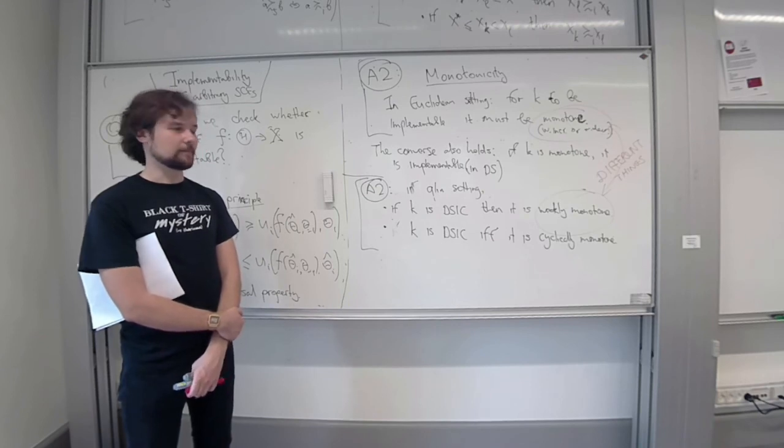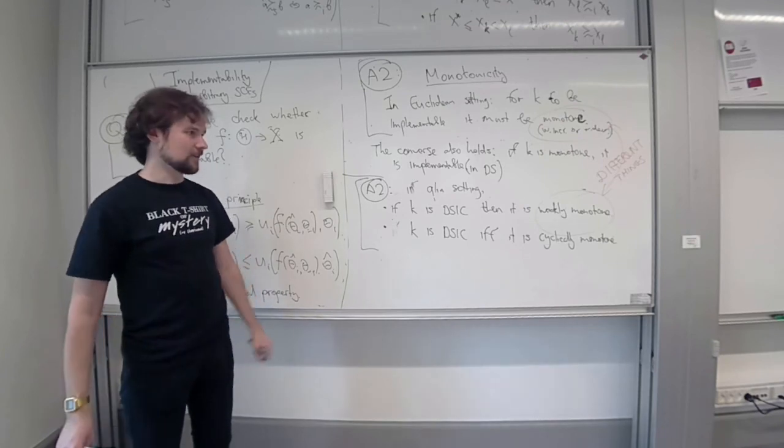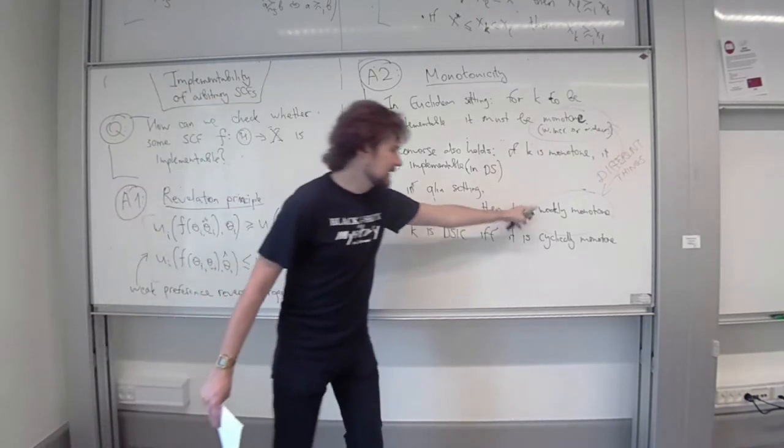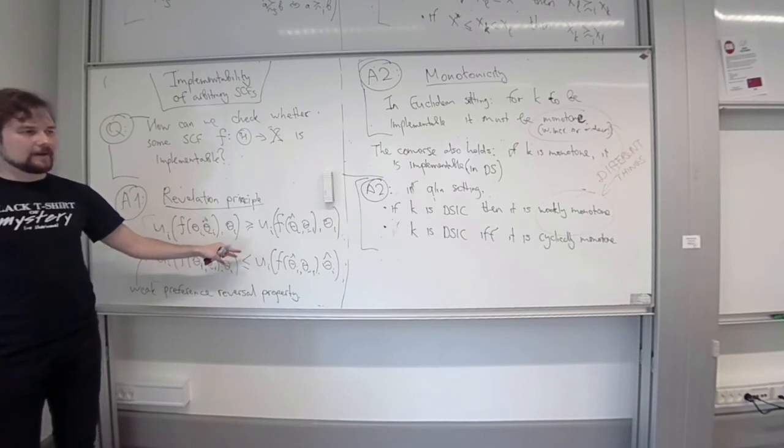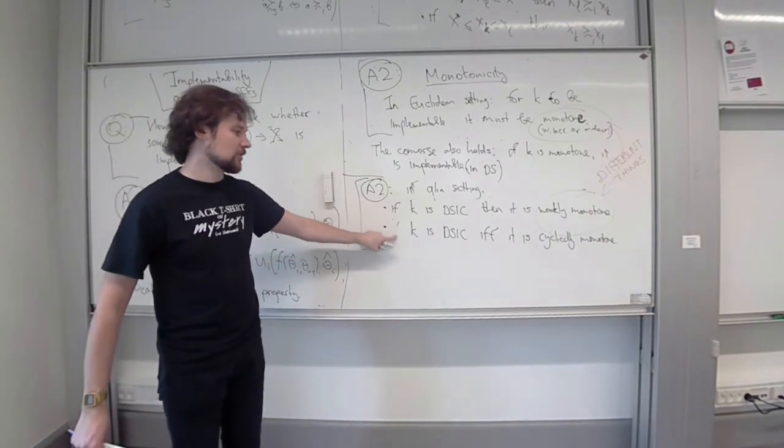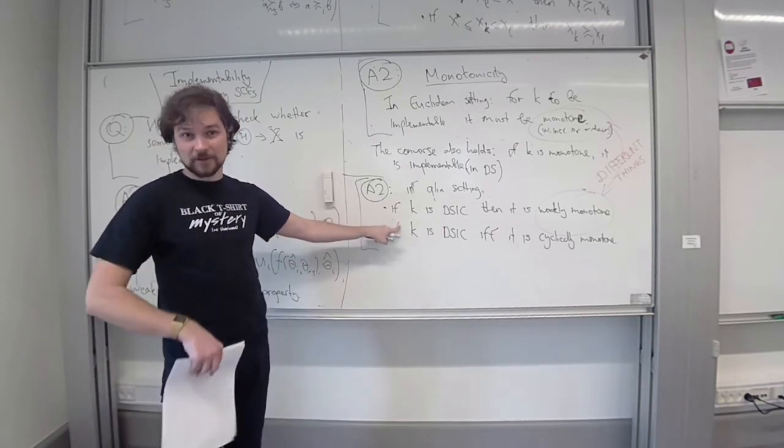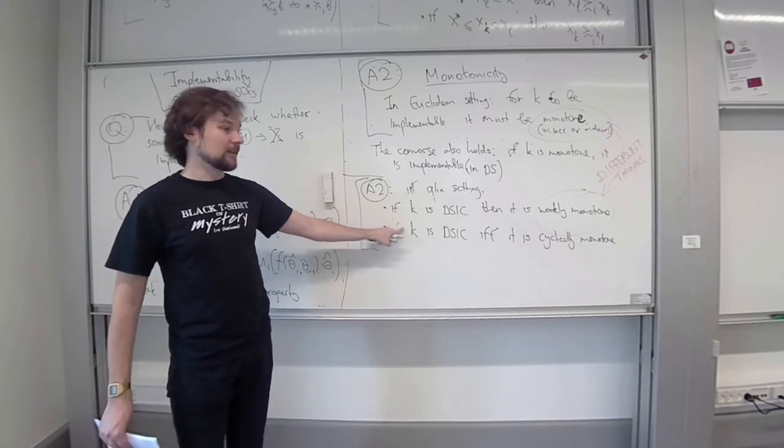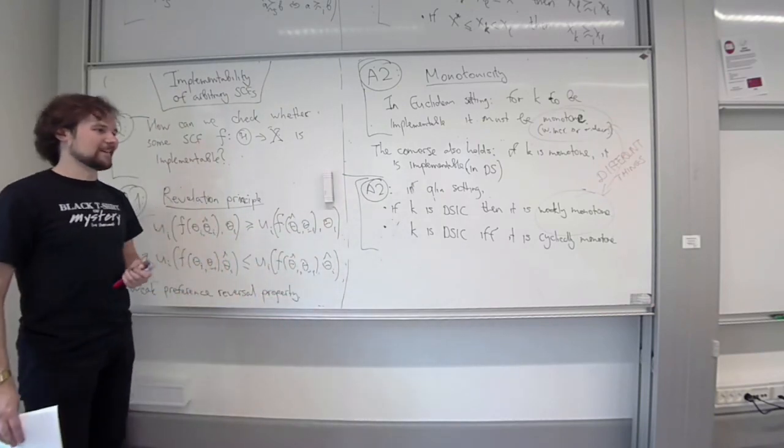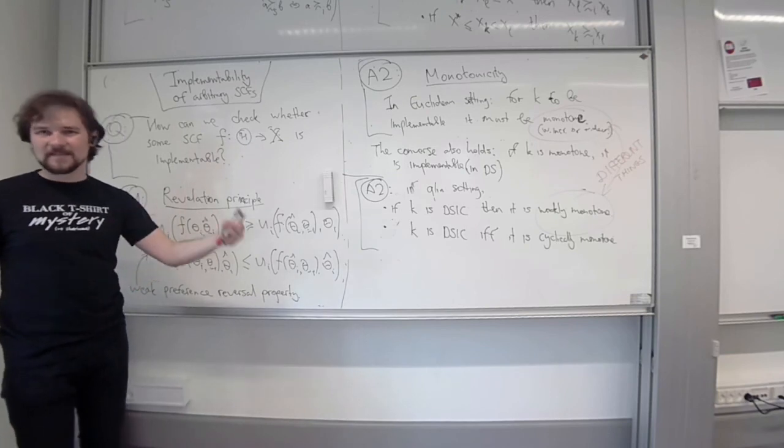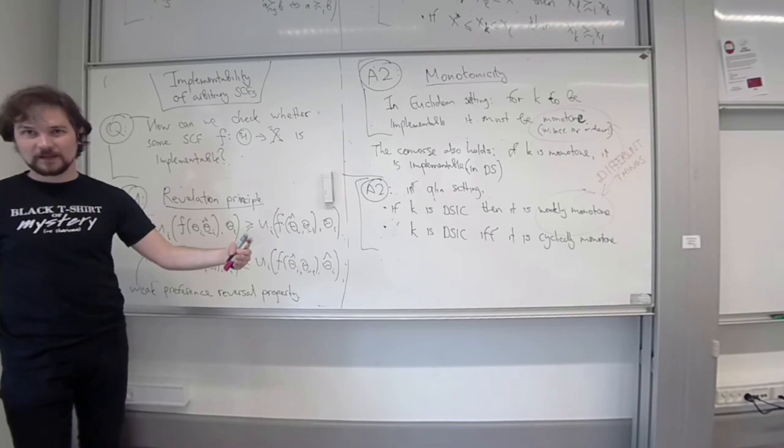I am not sure of stating these - I wanted to announce that these results are available. In a quasi-linear setting, you can use these two criteria to test implementability of a given allocation rule. But the most interesting part is about the general settings. There we can also have similar notions of monotonicity. We will have a sharp characterization that a given social choice function will be dominant strategy incentive compatible if and only if it satisfies that notion of monotonicity. But we will do that next time.